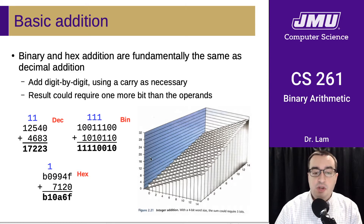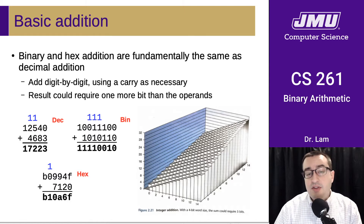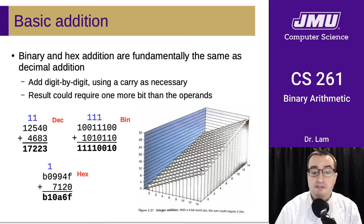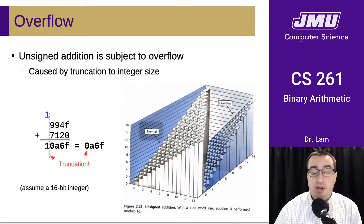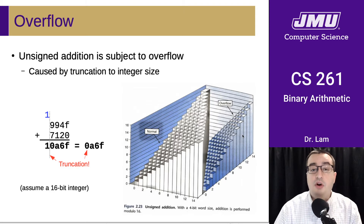What happens if we try to take those outputs and store them back into a four-bit result field? Hopefully you can see that what would happen is exactly the sort of thing we talked about last time, which is overflow. If you imagine taking a knife and cutting through the vertical plane at 16, some of these bars would get chopped off. In addition, they would wrap around, so you'd get some numbers with the correct answer and some numbers where you'd overflow and get the wrong answer.